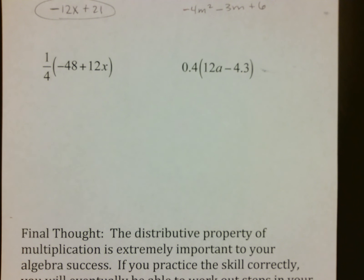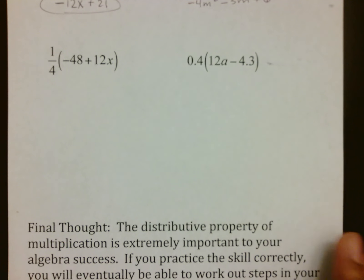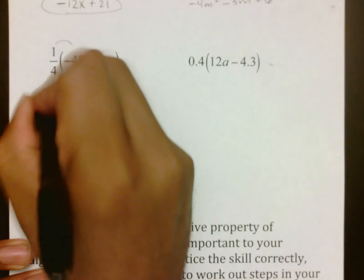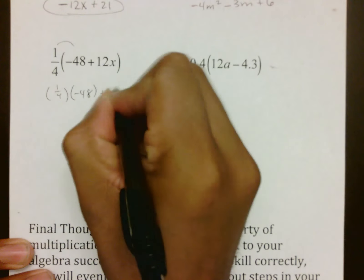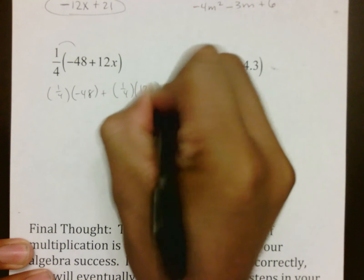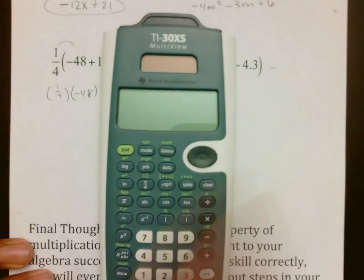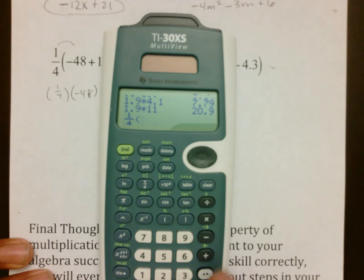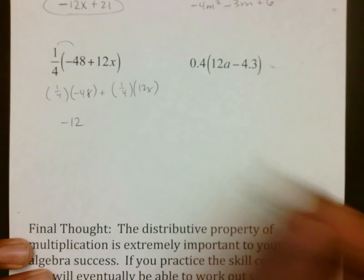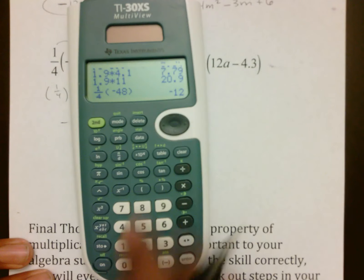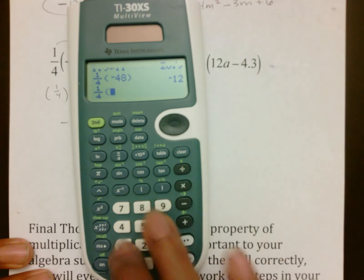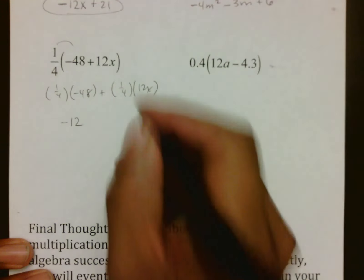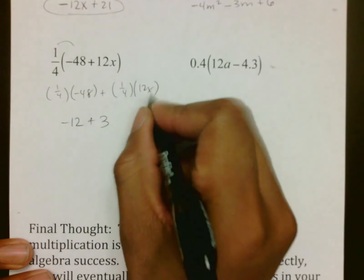Last two have decimals and fractions. They should not be an issue because you are allowed to use calculators on your work, so please make sure you take your time. In this case, 1 fourth meets negative 48, and 1 fourth meets 12x. If you don't know what it is, you simply take 1 fourth, type it in using your N over D button. 1 fourth meets negative 48, so 1 fourth times negative 48 is negative 12. And then 1 fourth times 12x, we don't care about the x, we do 1 fourth times 12, which gives me 3. So it will be plus 3, and don't forget that there's an x there.